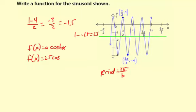We have a maximum at pi over 2, 1. So pi over 2 is the x value, and 1 is the y value. And then we have a minimum at 3 pi over 4, and then negative 4.